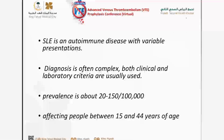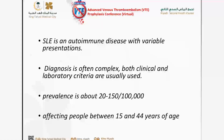When we talk about SLE, as we all know, it's an autoimmune disease with diverse presentations. The diagnosis is often complex and requires both clinical and laboratory criteria. The prevalence of SLE is about 20 to 150 cases per 100,000.